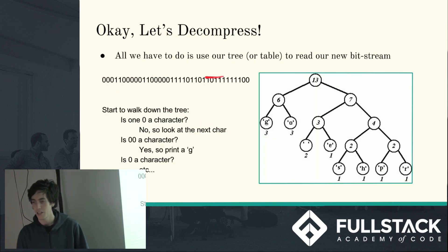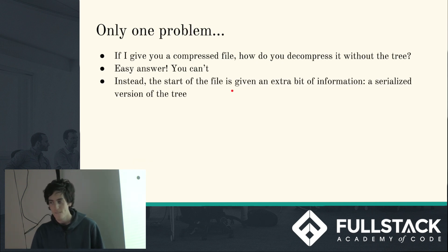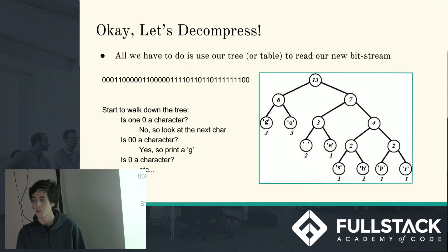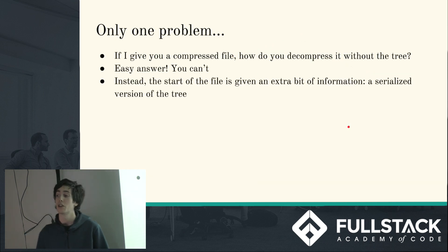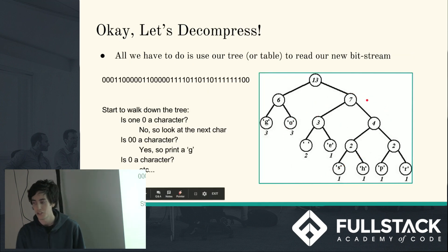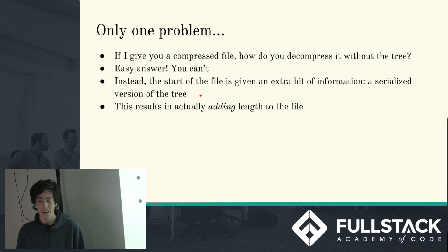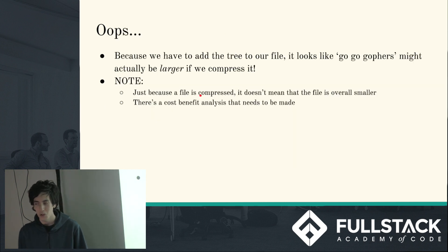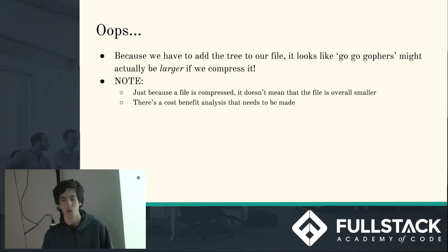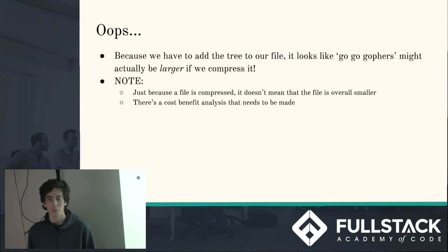Instead, what you need to do is add to your file header the binary tree that you used to compress it in the first place. Some might think: why not just encode the frequencies of each character at the beginning? The reason is you can construct this tree in many different ways, and if you just give the frequencies, you might end up with a completely nonsense file. This means you have to add length to the file to a certain degree. Because "GoGoGophers" is so short and serializing the tree is not short, if we were compressing this with Huffman we'd probably end up with something longer than what we started with. Just because it's compressed doesn't mean it's smaller — there's always a cost-benefit analysis.